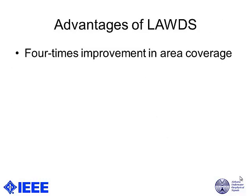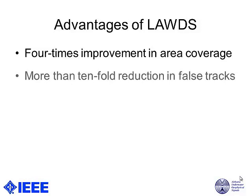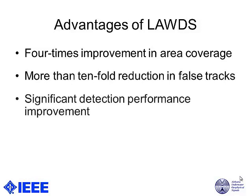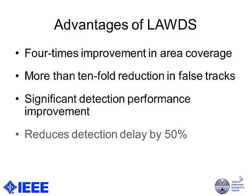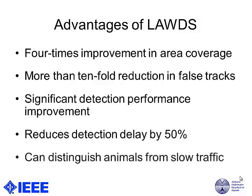The advantages of our approach: we improved area coverage and can effectively use the entire range of the radar. We reduced false tracks by about ten times. Detection performance has improved — we are not missing as many targets as before. Detection delay has been reduced; earlier it took about six to eight seconds to confirm detection, and we can now do it within about three seconds. We are also able to distinguish animals from slow-moving traffic.